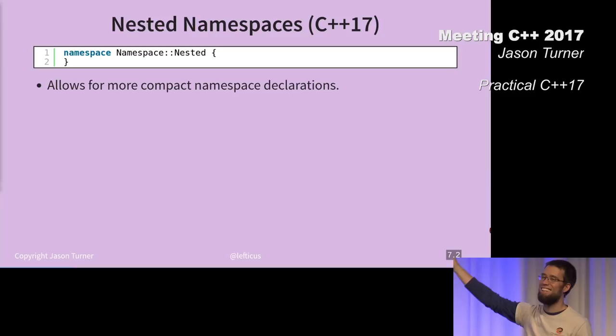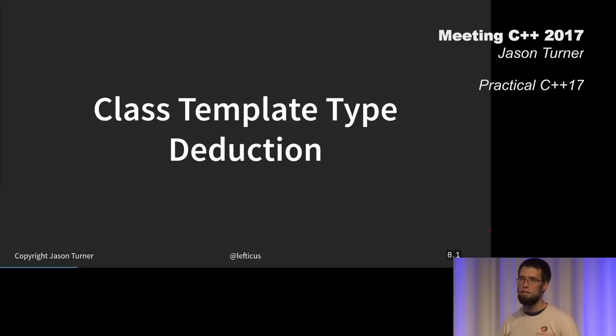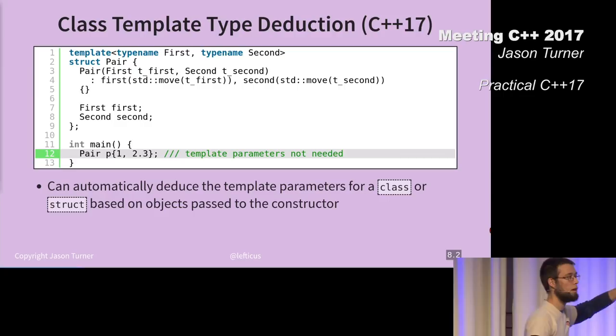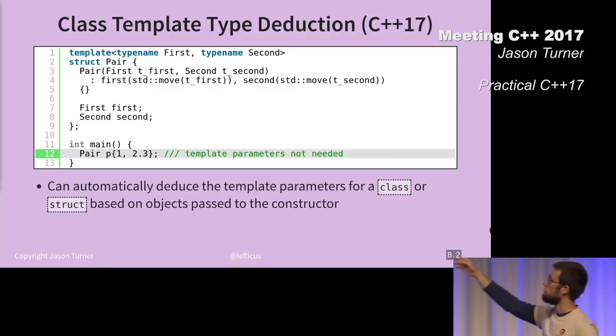Those of you that have worked with C++17, are you taking advantage of class template type deduction? Vittorio is, and a couple other hands came up. This is effectively what class template type deduction gives you. I've implemented my own simple standard pair implementation here. I'm just able to demonstrate that I don't have to specify the types of the template parameters. I can just implicitly infer them from the types that were passed in. So that is a pair of int and double.